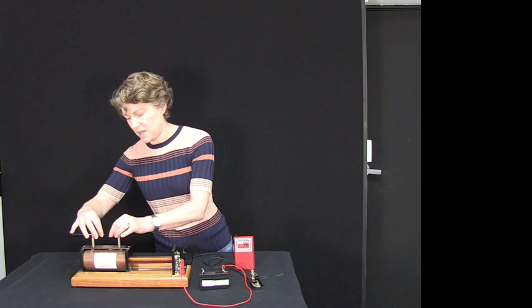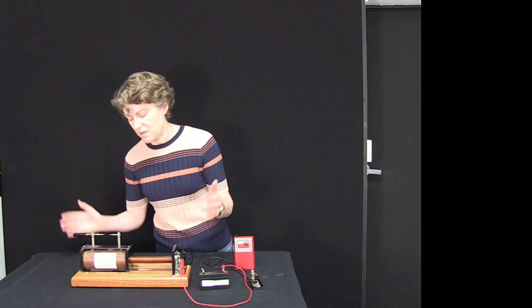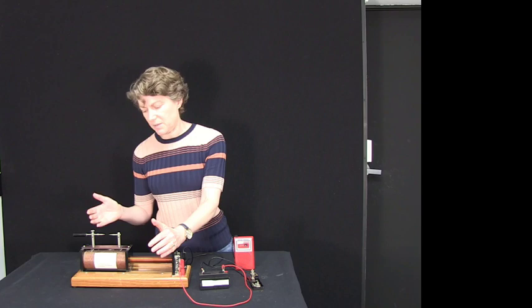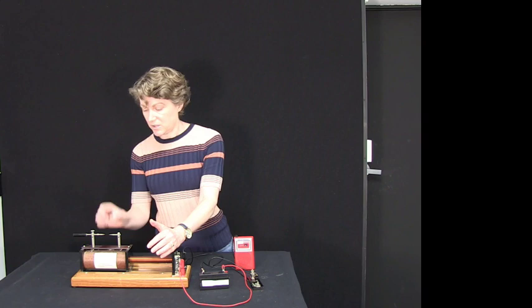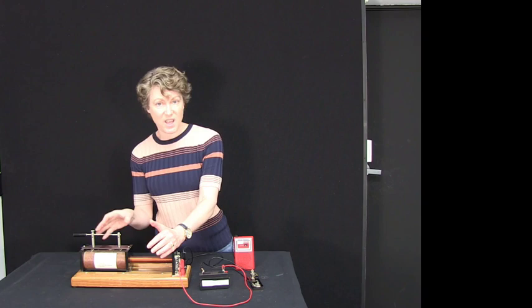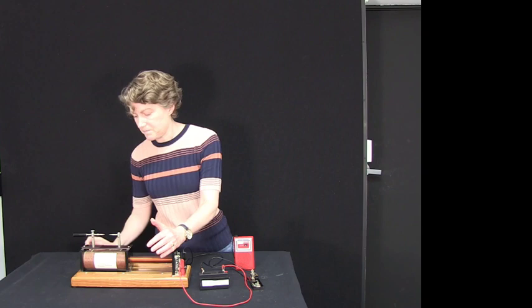So what I'm going to do is set my spark gap to about a centimeter. It takes, depending on humidity and all sorts of air conditions, as a rule of thumb you could say it takes about 10,000 volts to jump across about a centimeter of air. Because at that potential difference that's enough to ionize the air and so current can flow across and make the spark.